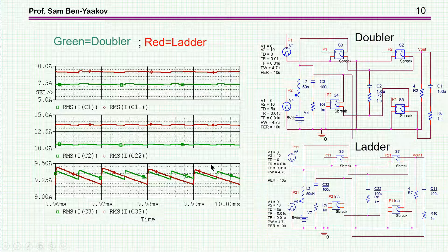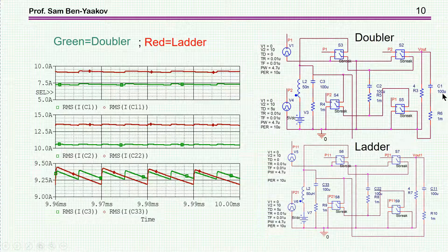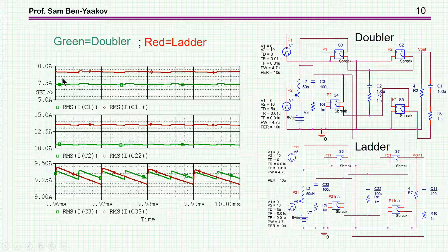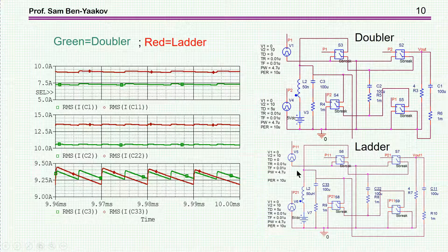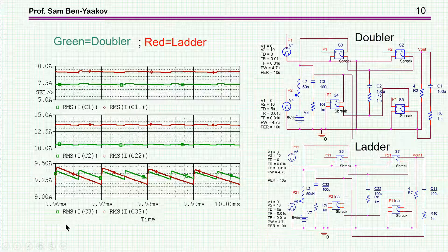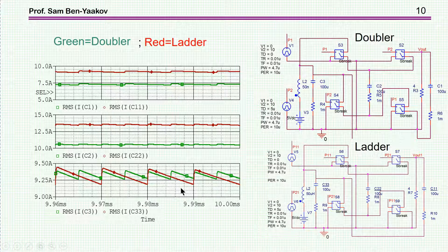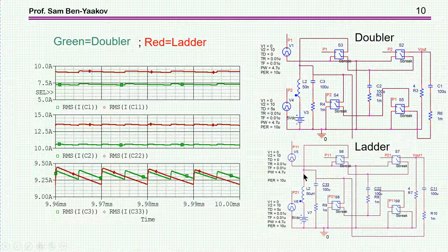So, what we see here for the case of the same size capacitor, here 100 microfarad and here also 100 microfarad, and 50 nanohenry, we see that the RMS values of the ladder, which is the red trace here, are higher. And this, of course, will cause the efficiency with the ladder to be lower than the efficiency with the doubler.